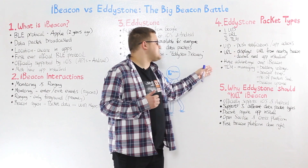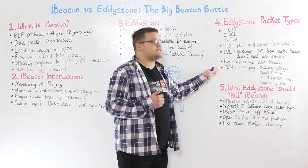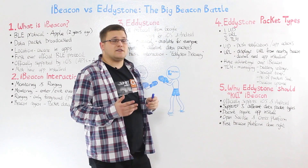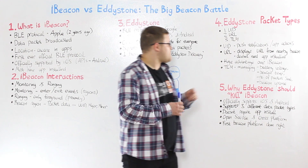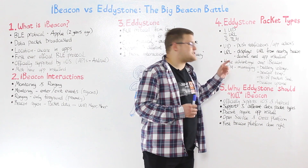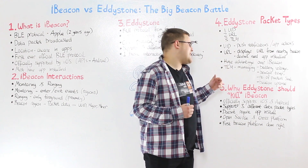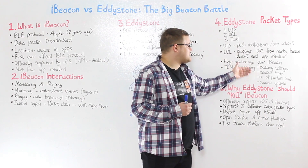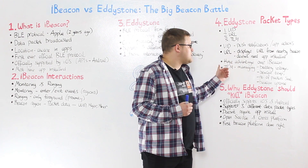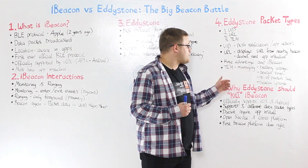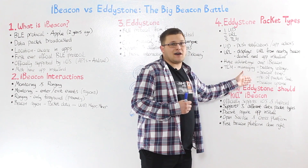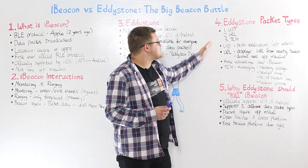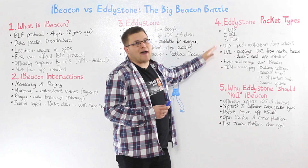The last packet is Eddystone Telemetry. This packet is used for managing beacons. In this packet, we can find information such as battery voltage, beacon temperature, number of packages sent, or beacon uptime. This packet is sent alongside the two other packets.